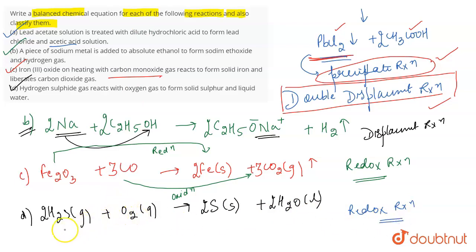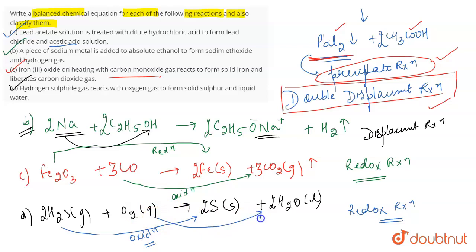In the H₂S reaction: H₂S is converted to sulfur, which means loss of hydrogen has taken place, and loss of hydrogen means oxidation has taken place. Whereas O₂ is converted to water, where loss of oxygen has taken place and loss of oxygen represents reduction. So both oxidation and reduction take place simultaneously — that is why this is also a redox reaction. That's all for the question.